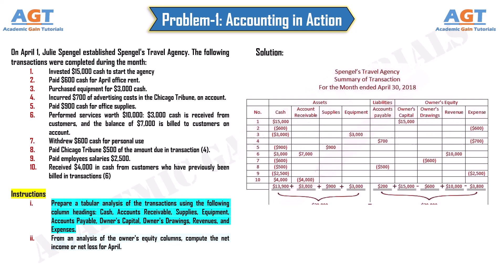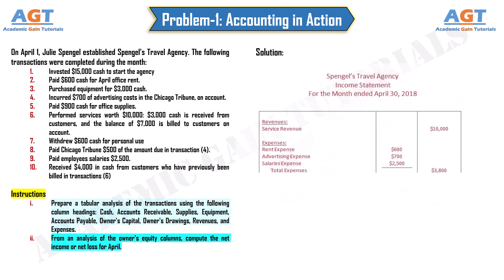Then we identify expenses. From the tabular analysis, there was rent expense of $600 paid in cash for April office rent, and advertising expense of $700. Adding up all the expenses: rent expense $600 plus advertising expense $700 plus salaries expense $2,500 equals total expenses of $3,800.